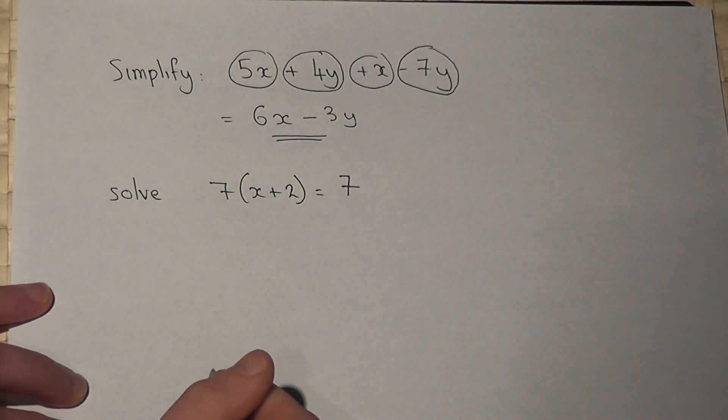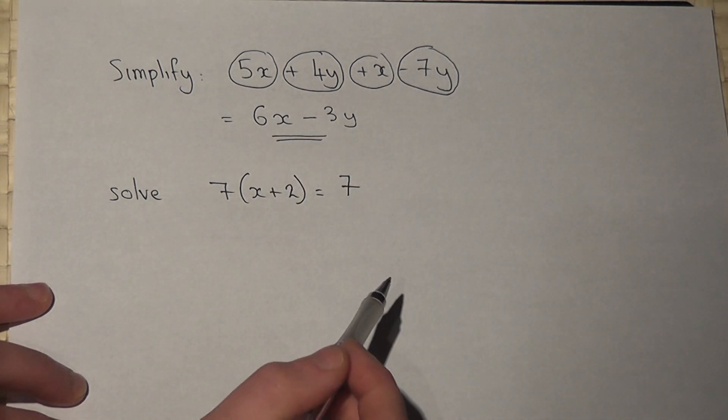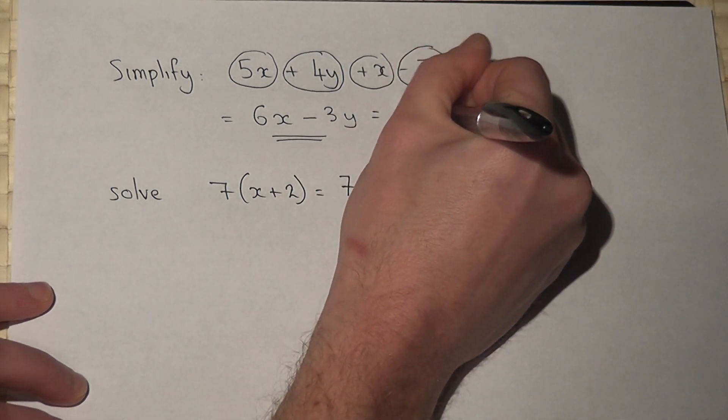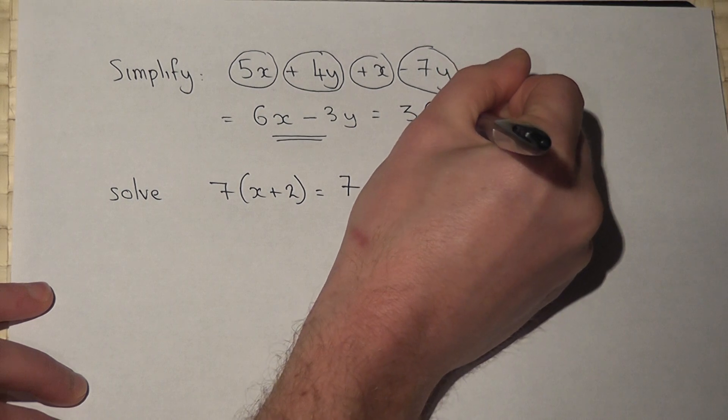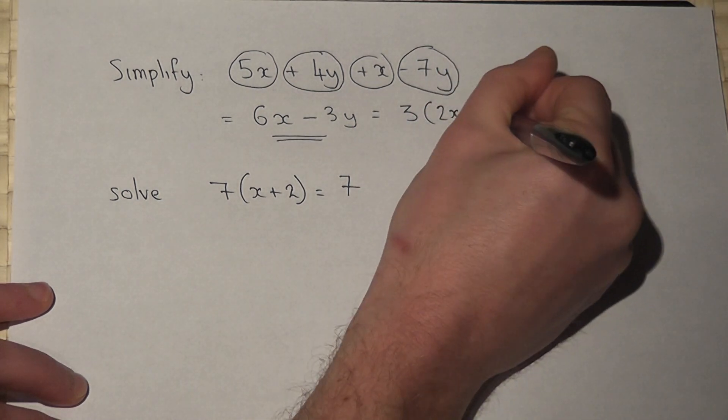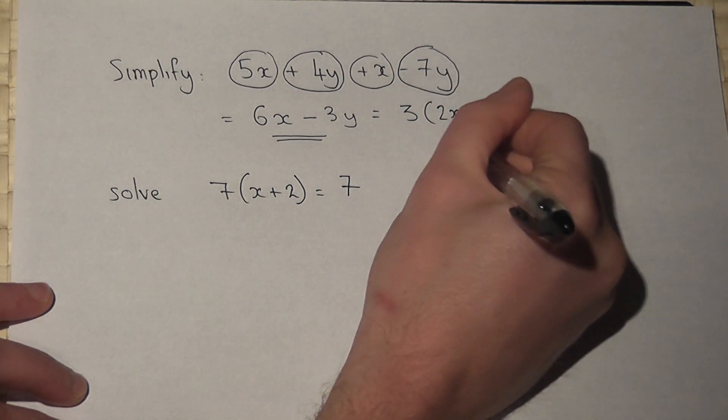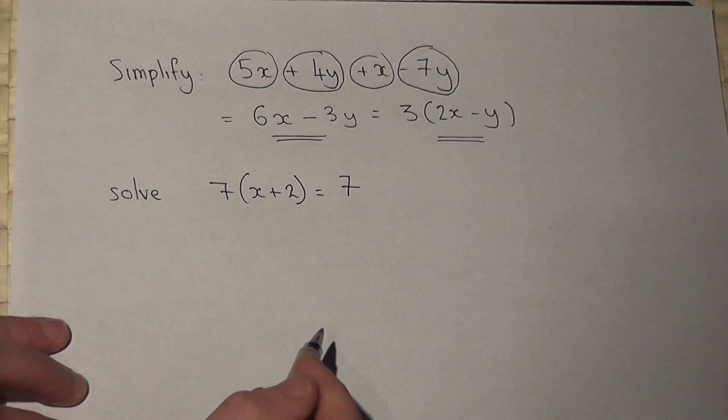Now one extra possible step is we can factorise because both of these terms have a factor of 3. So I can write this as 3 bracket. Now 3 times 2x is 6x and 3 times negative y is negative 3y. So I've factorised my final answer.